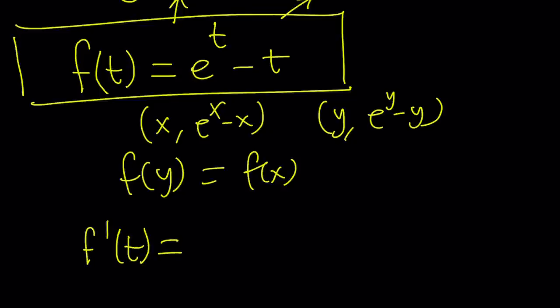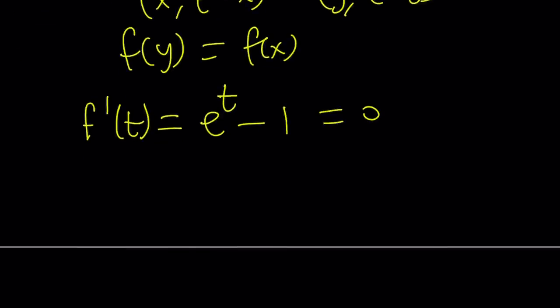So let's go ahead and look at the derivative of this function. You're going to find something interesting about it. If you differentiate this, you're going to get e to the power t minus 1. Set it equal to 0, you get e to the t equals 1, which means t equals 0. So that's a critical point.